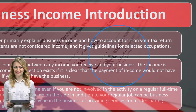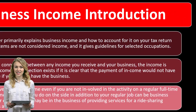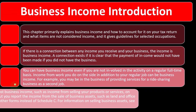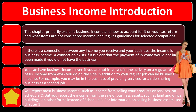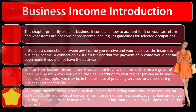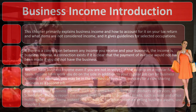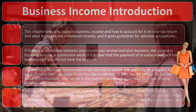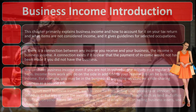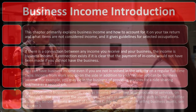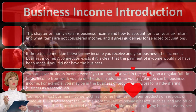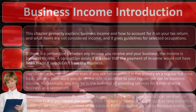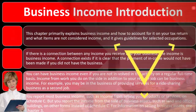Income from work you do on the side in addition to your regular job can be business income. For example, you may be in the business of providing services for a ride-sharing business as a second job. You report most business income — such as income from selling your products or services — on Schedule C. But you report the income from the sale of business assets, such as land or an office building, on other forms instead of Schedule C.